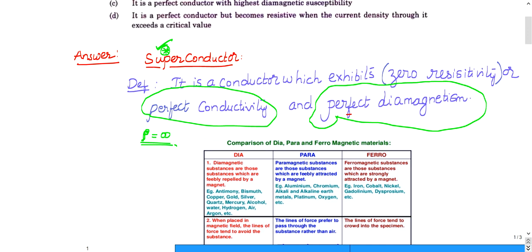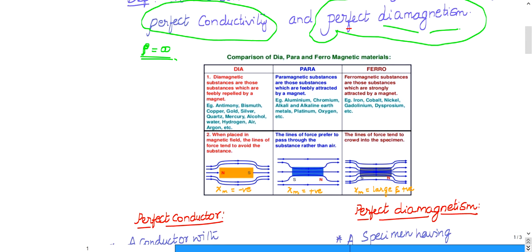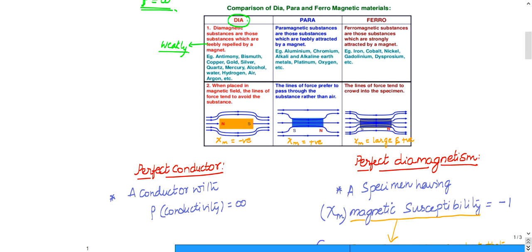Perfect diamagnetism is not as easy to explain as conductivity, because many people don't know what diamagnetism is. Let us quickly see what diamagnetic, paramagnetic, and ferromagnetic substances are. There are also ferri and anti-ferri substances, but we don't need those now. Diamagnetic substances are materials which are feebly — meaning weakly — repelled by a magnet.